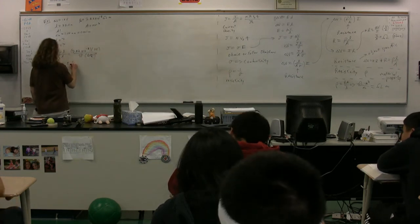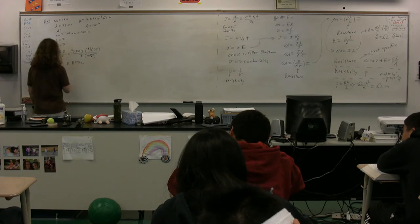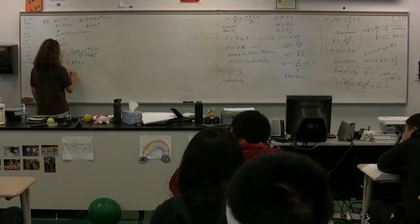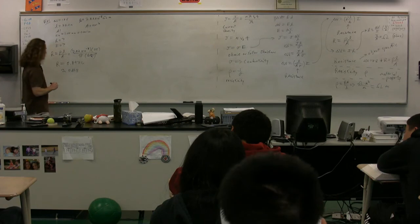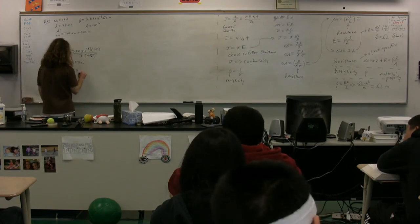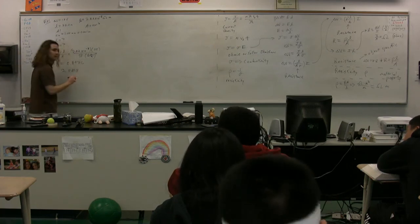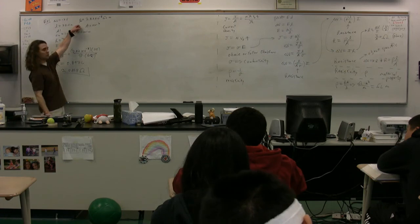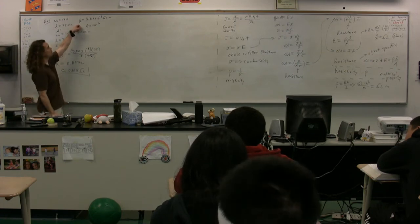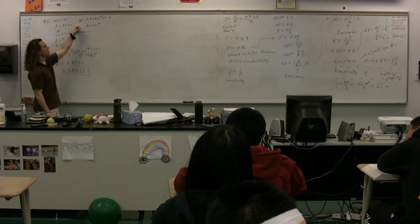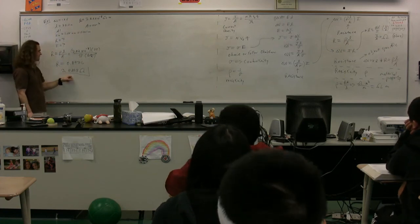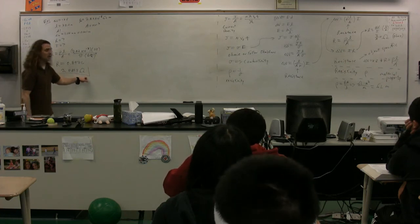0.8976. We'll actually have three sig figs here. So, 0.898, dimensions, please, Stacy. Ohms. So, this wire is made of aluminum, and aluminum has a resistivity of 2.82 times 10 to the negative 8 ohm meters. This particular wire, because it has a certain length and a certain diameter, is going to have a specific resistance of 0.898 ohms.